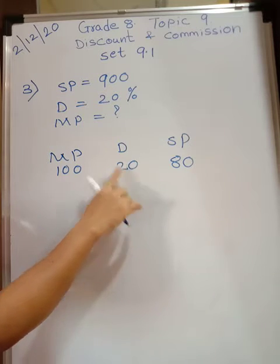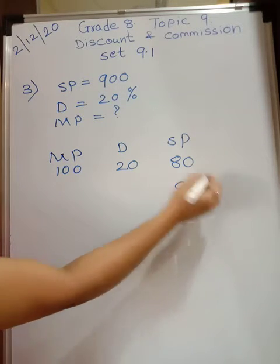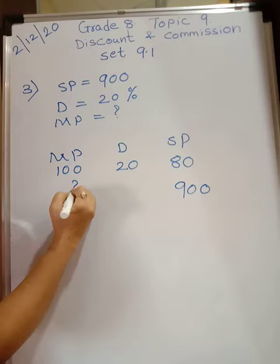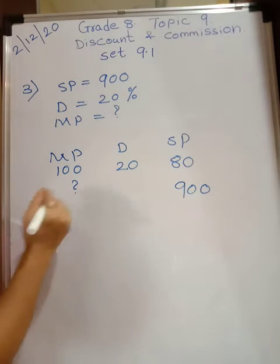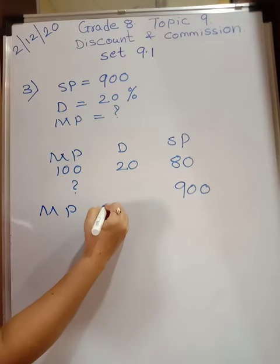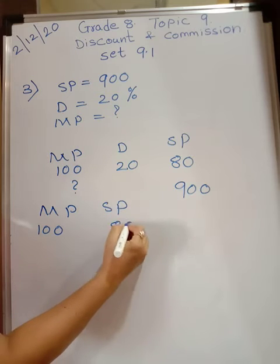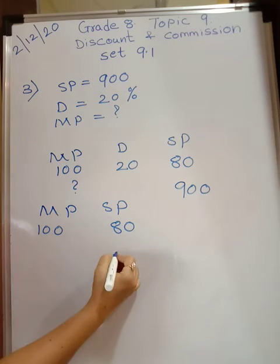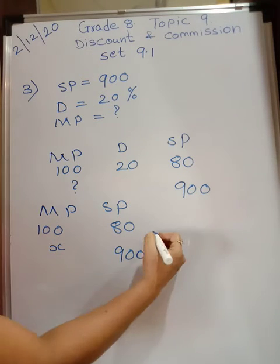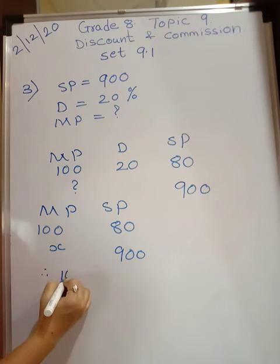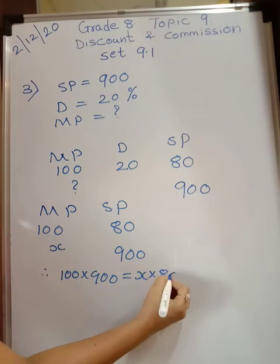Now we have selling price of 900. So if marked price is 100 rupees and selling price is 80 rupees, and they have given selling price as 900, what would be the marked price — let that be x. Cross multiply: 100 into 900 is equal to x into 80.